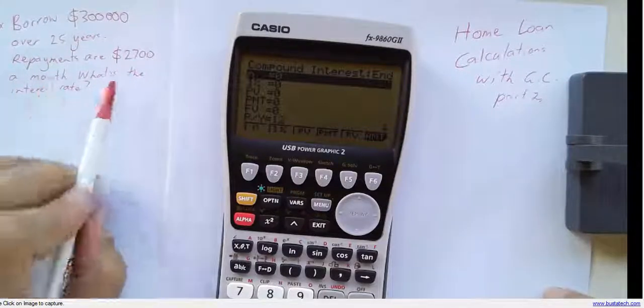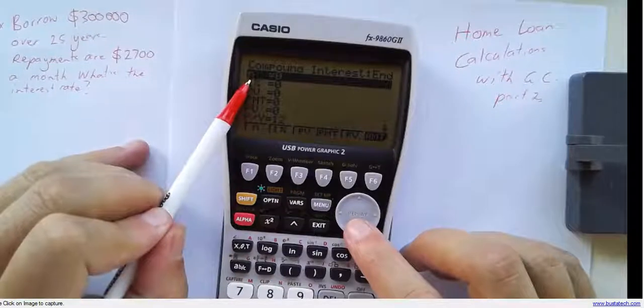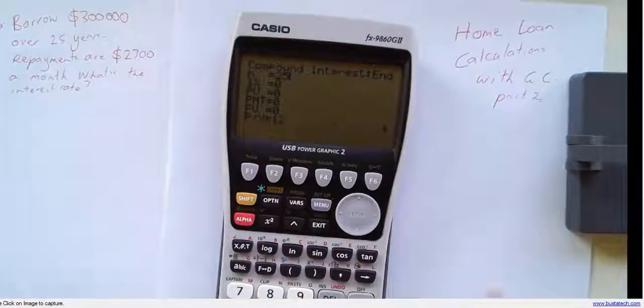Okay, different type of question. Borrow $300,000 over 25 years if there are payments of $2,700 a month. What's the interest rate? All right, so we know everything that we need to know except for the interest rate.